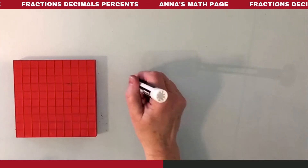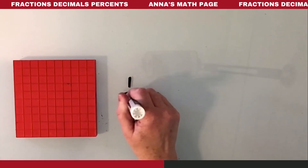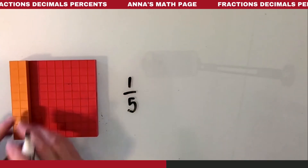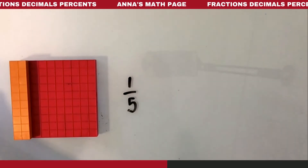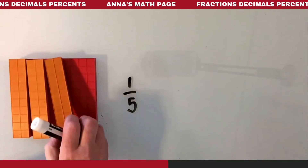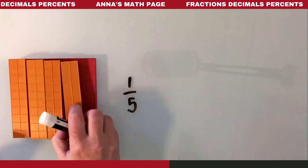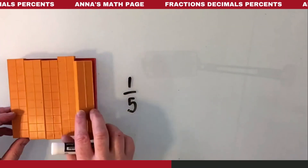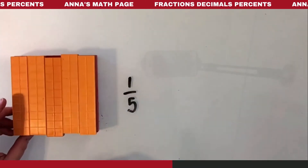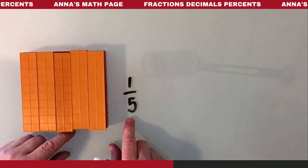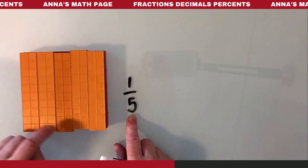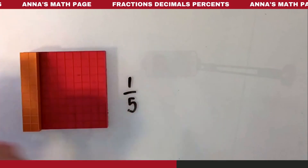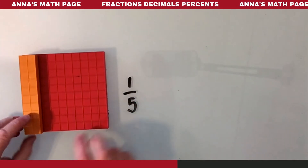Let's talk about having a fraction first. So 1 fifth — it's 1 out of 5 equal pieces. I'm going to split my 100 block into 5 equal pieces. This tells me that I need 5 equal pieces, and this tells me just to take 1 of those 5 equal pieces. So that's 20.